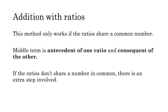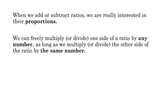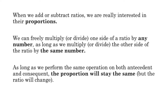Very often we'll want to add ratios that don't share a number in common — in that case, there's an extra step. Any time we're adding or subtracting ratios, what we're really interested in is their proportions, not the specific numbers. This means we can freely multiply one side of a ratio by any number we choose, as long as we multiply the other side by the same number. As long as we apply the same operation to both the antecedent and the consequent, the proportion between them will remain the same.